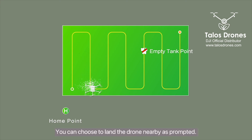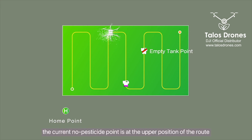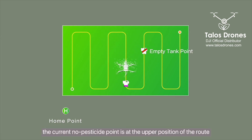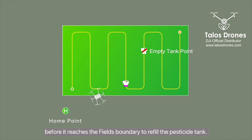You can choose to land the drone nearby as prompted. For example, the current no-pesticide point is at the upper position of the route, but you can also land the drone before it reaches the field's boundary to refill the pesticide tank.